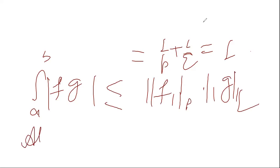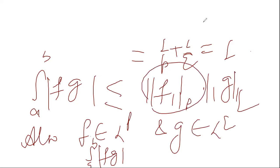Also, F is in which space? Lp. G is in which space? Lq. Therefore, integration A to B mod of FG - now see, this is in which space? Infinity? F is in Lp, G is in Lq.